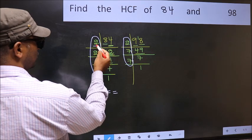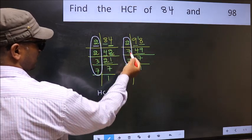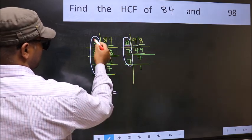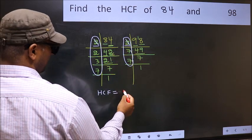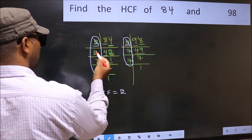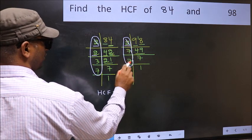So now let us find the numbers which should be present here and here. Starting with the number 2. Do we have 2 here? Yes. So cut 2 right here. Next number 2. Do we have 2 here? No.